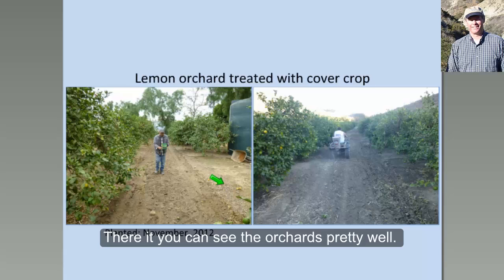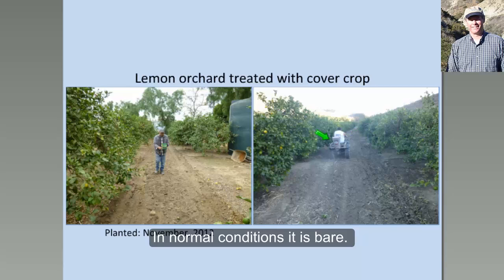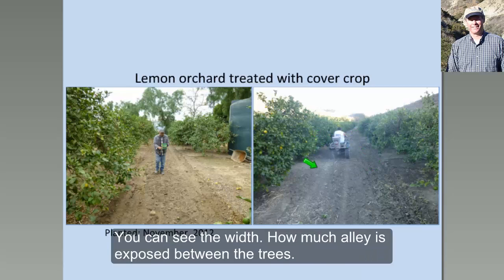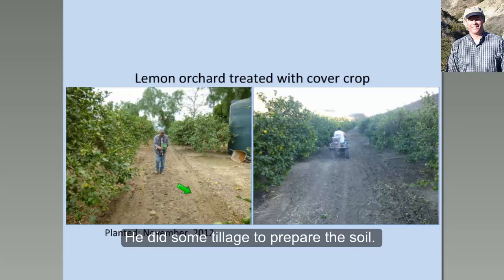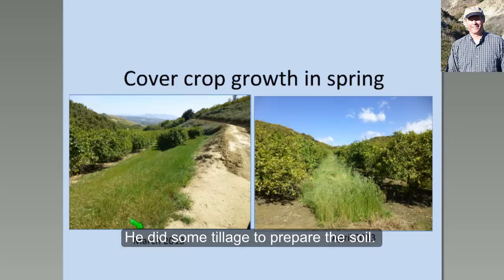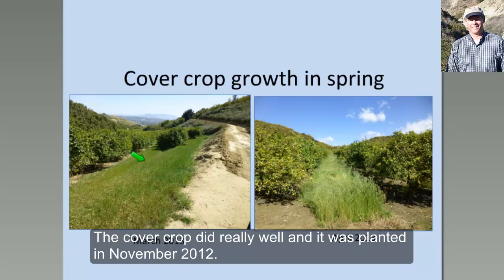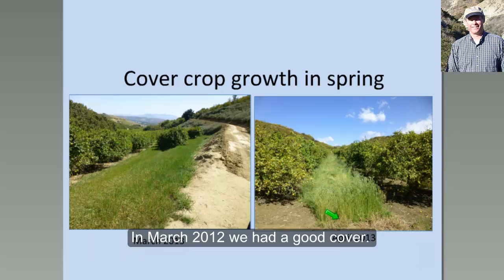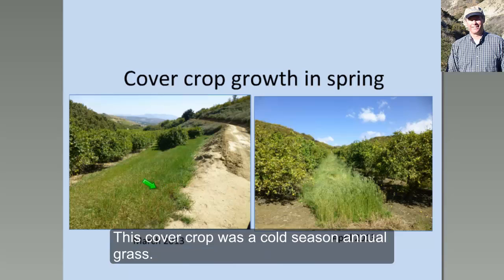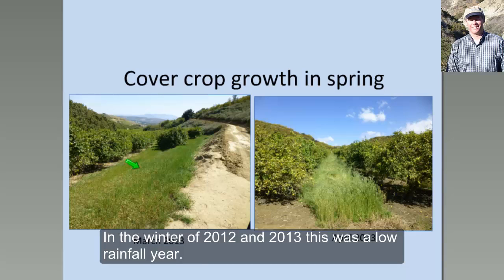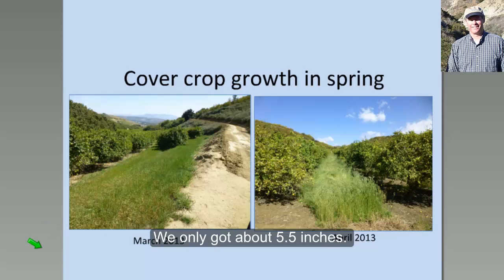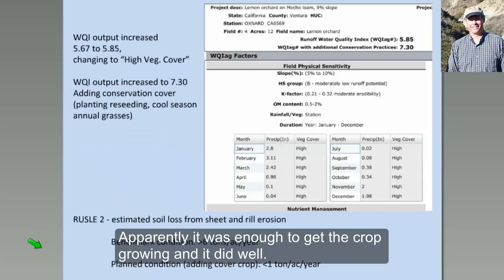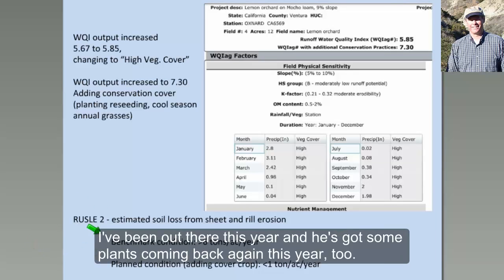You can see the orchards in normal conditions — it's pretty bare out there, with a lot of alley exposed between the trees, so we do get a fair amount of runoff and erosion here. He did some tillage work to prepare the soil. The cover crop did really well. Planted in November of 2012, by March 2013 we had good cover, and by April 2013 we got a good seed crop. This cover crop is cool season annual grasses that can live on our rainfall. The winter of 2012-2013 was a low rainfall year — only about five and a half inches — but it was enough to get the crop growing well.